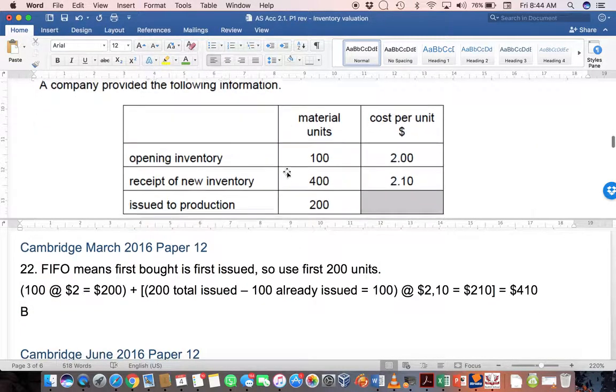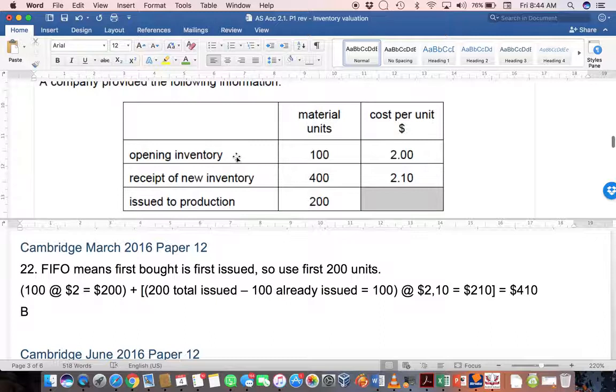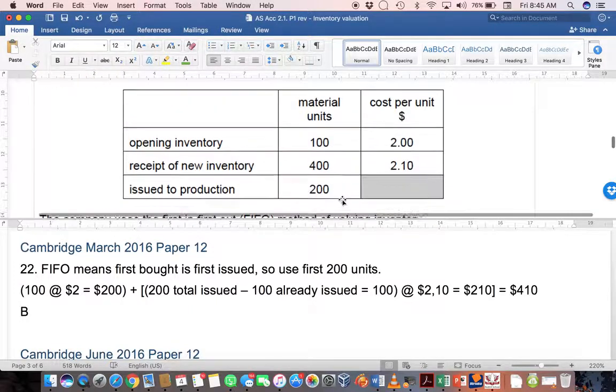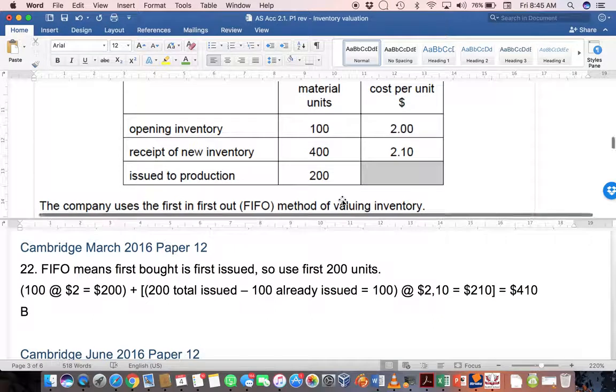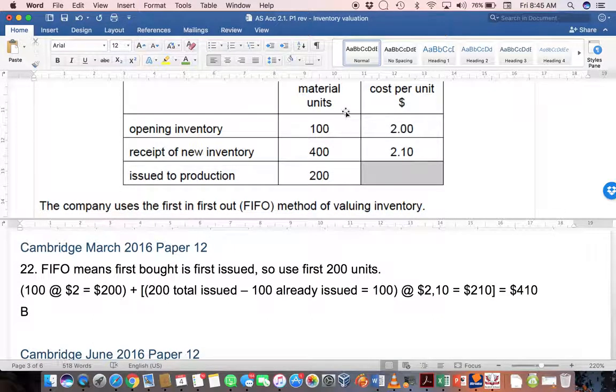Cambridge March 2016 paper 12, question 22. A company provided the following information. You are given opening inventory of 100 units at $2 each, receipt of new inventory 400 units at $2.10, and 200 units that were then issued to production. The company uses FIFO to value inventory. In other words, to work out your cost of sales you would work from the top down or the beginning towards the end. If you're looking at your closing inventory, you would use the ending upwards. We are asked, what is the cost of material issued to production?